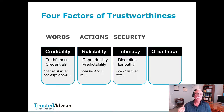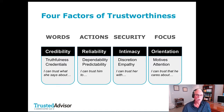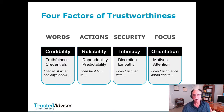Those three factors — credibility, reliability, intimacy — are in the numerator: C, R, I. The denominator factor, S, which stands for self-orientation, is rather different. This one has to do with focus — who you're paying attention to. A higher number for self-orientation drives down the value of T, trustworthiness. More self-orientation means less trustworthiness.